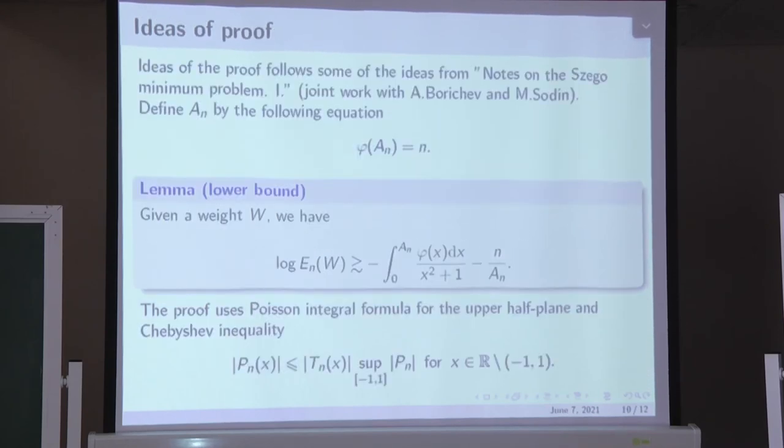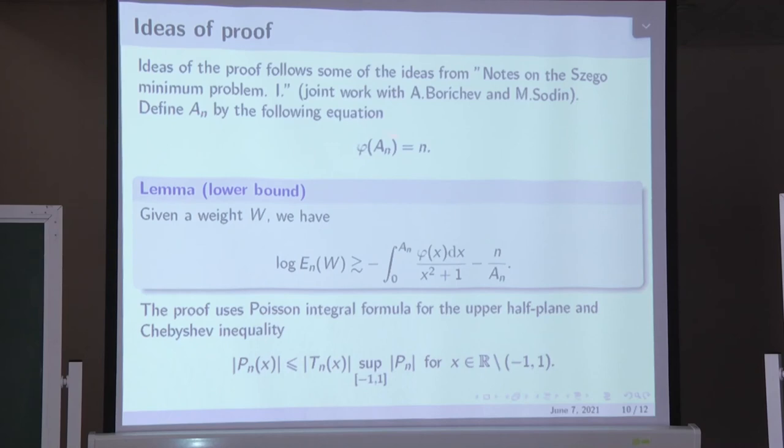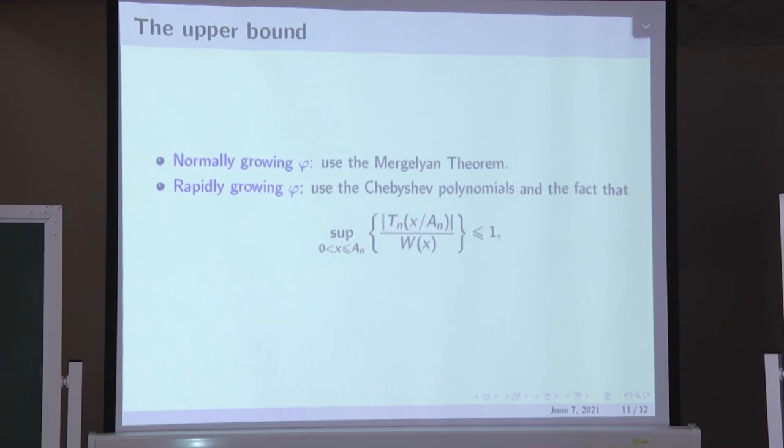So now ideas of proof. These ideas follow some of the ideas from nodes of the minimum problem. This is a joint work with Alexander Borichev and Mikhail Sodin. So we define numbers a_n, which is the pre-images under the function φ of n. And the proof of the lower bound is based on the Poisson integral formula and the Chebyshev inequality, classical Chebyshev inequality. And the upper bound, I have some time or no. Okay.